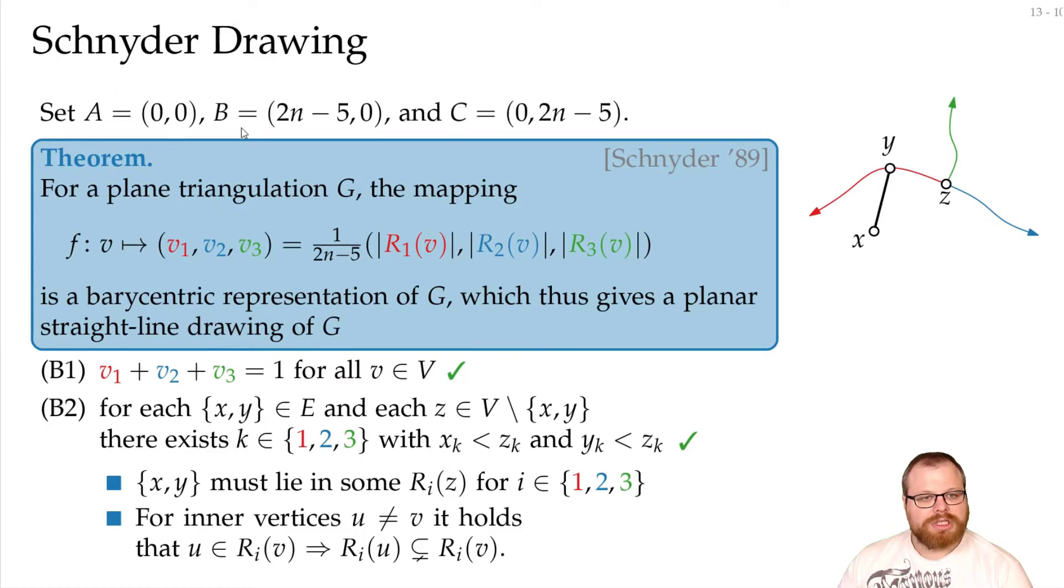We just pick these three coordinates. We put a at the origin, b at 2n-5, 0, and c at 0, 2n-5. And now all the coordinates will be integer, because these numbers here are integers. And we divide it by 2n-5, but then multiply it with 2n-5, so we have integer coordinates everywhere here. That means that we get a drawing on the 2n-5 times 2n-5 grid.